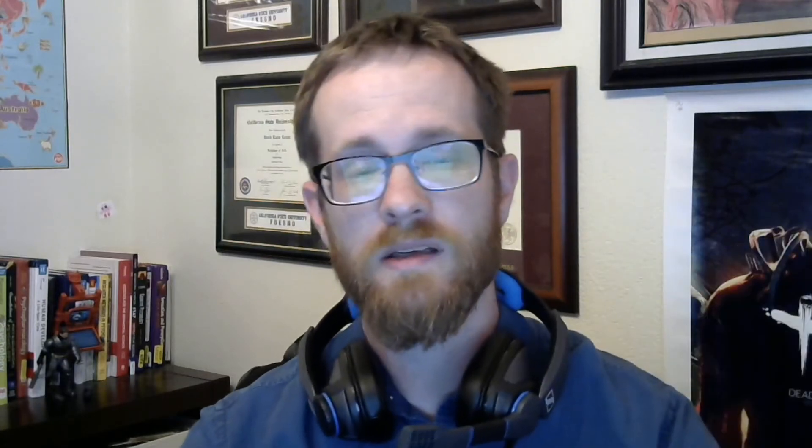You can have data that trend upwards, or data that trend downwards. That's the only difference between trends and levels — whether it's horizontal or diagonal. There are some important terms we use when talking about how consistent these levels and trends are, and one of those terms is stability.